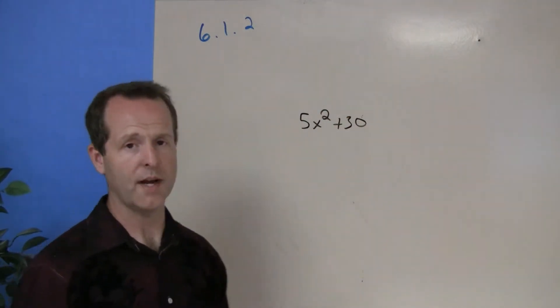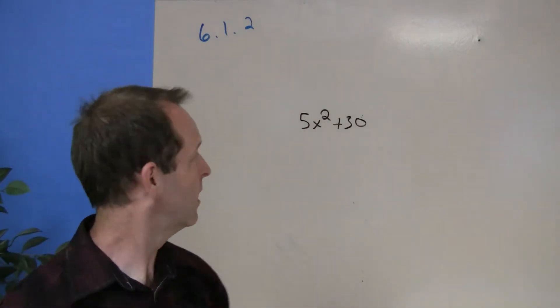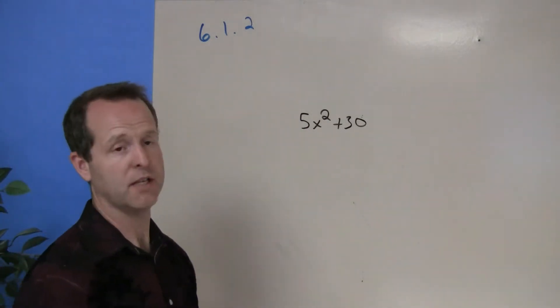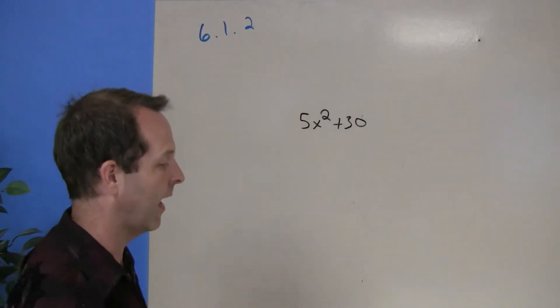We spent a little time discovering what the greatest common factor is between two terms or three terms or four terms. I want to present to you 5x² + 30 and see if we can determine what its greatest common factor is and then pull that on out.